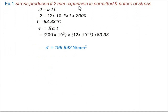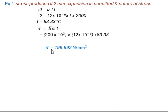Third part: stress produced if 2 mm expansion is permitted. Using the free expansion formula delta L = alpha × T × L, and since delta L = 2 mm is given, we solve for T. With alpha known and L = 2000 mm, we get T = 83.33°C — the temperature corresponding to 2 mm expansion. Putting this T back into sigma = E × alpha × T, the temperature stress = 199.992 N/mm² (MPa).